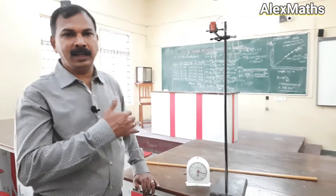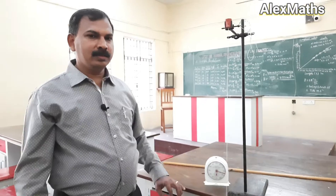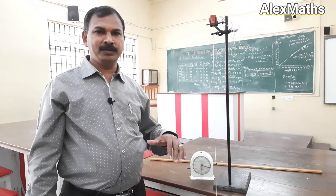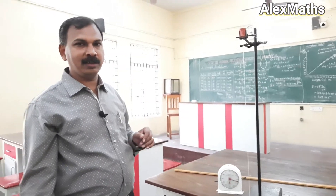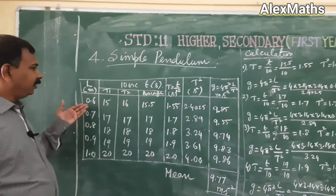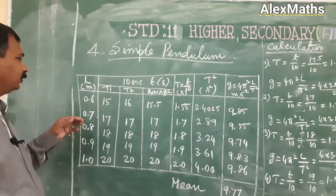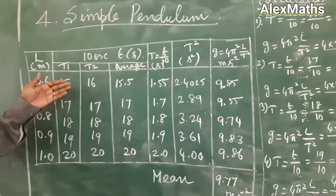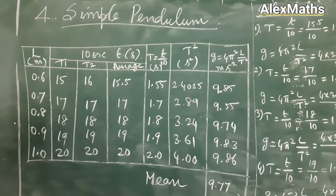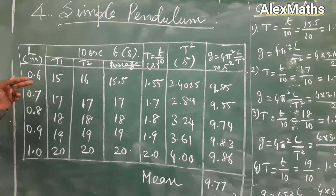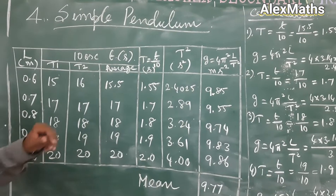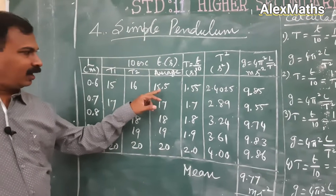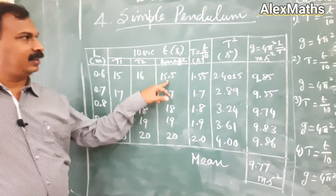By varying the length of the pendulum I am finding out the time period of oscillation. Once you have finished taking readings, enter them in your observation table and do the calculation. For various lengths, record the time for 10 oscillations for the first trial, second trial, and take the average. Time period is the time taken for one oscillation, so the average divided by 10 gives the time period.